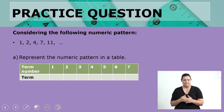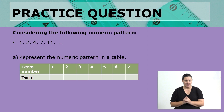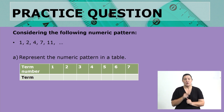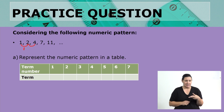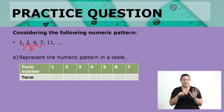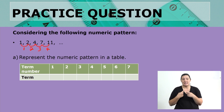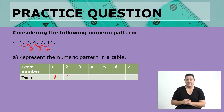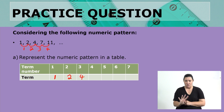Let's move on to more practice questions. The pattern is 1, 2, 4, 7, and 11. The first difference is 1 (2 minus 1), the second difference is 2 (4 minus 2), then 7 minus 4 gives a difference of 3, and 11 minus 7 gives a difference of 4. We can fill out our table: the first term is 1, second is 2, third is 4, fourth is 7, and fifth is 11.